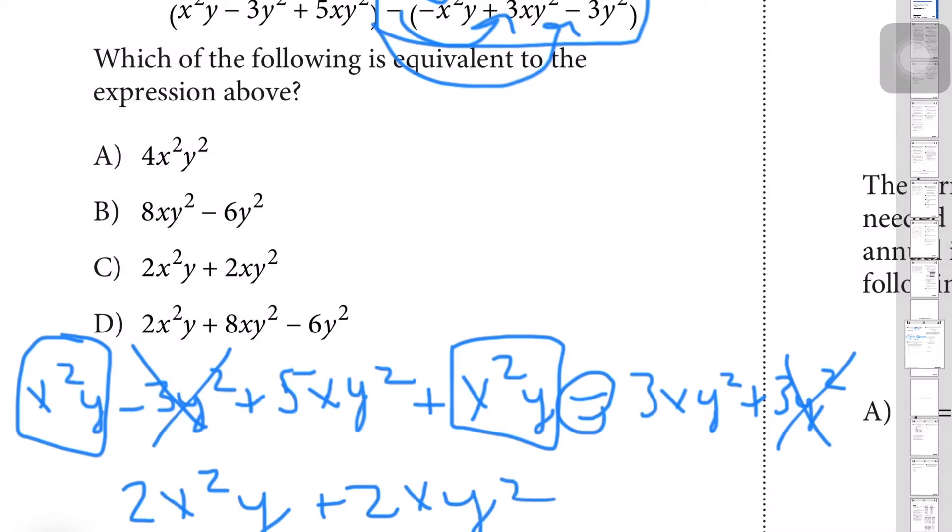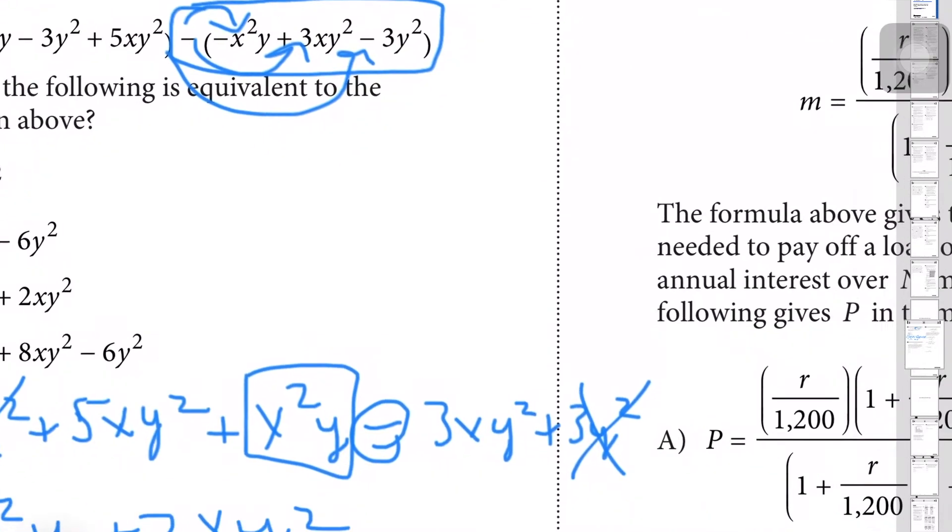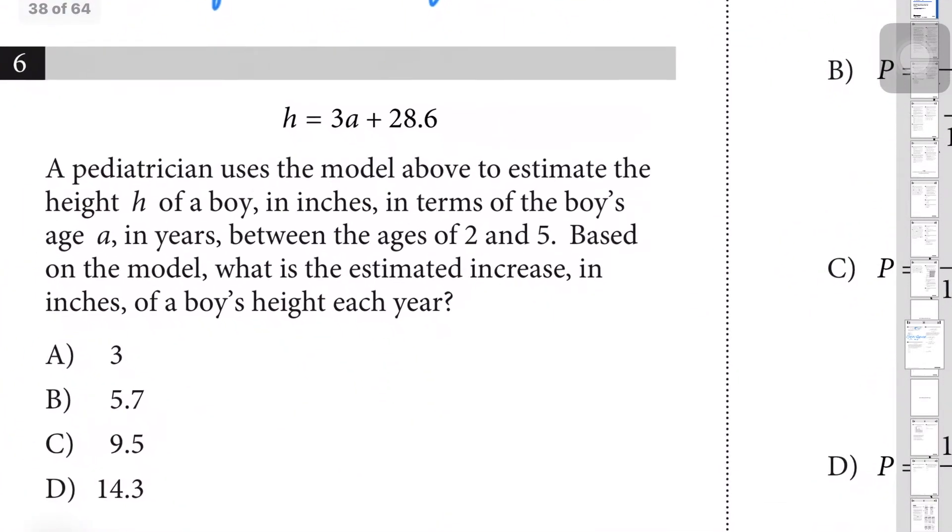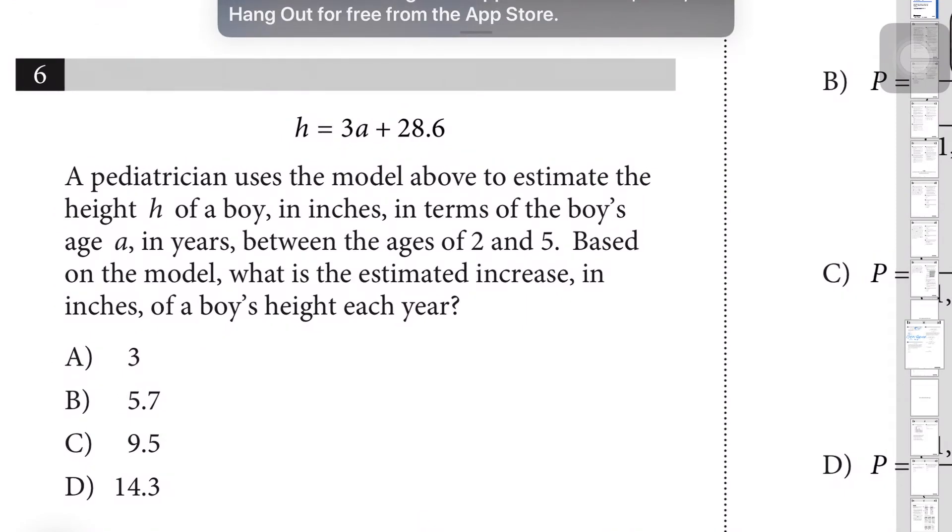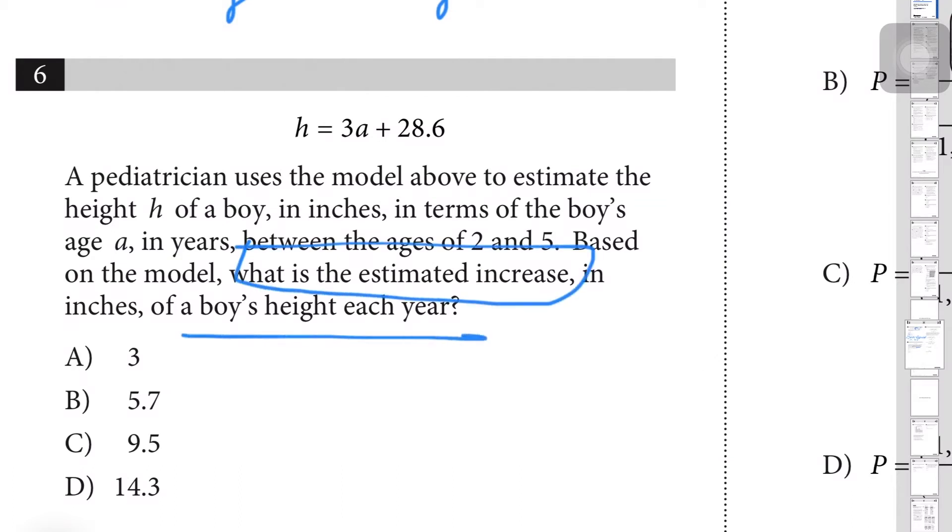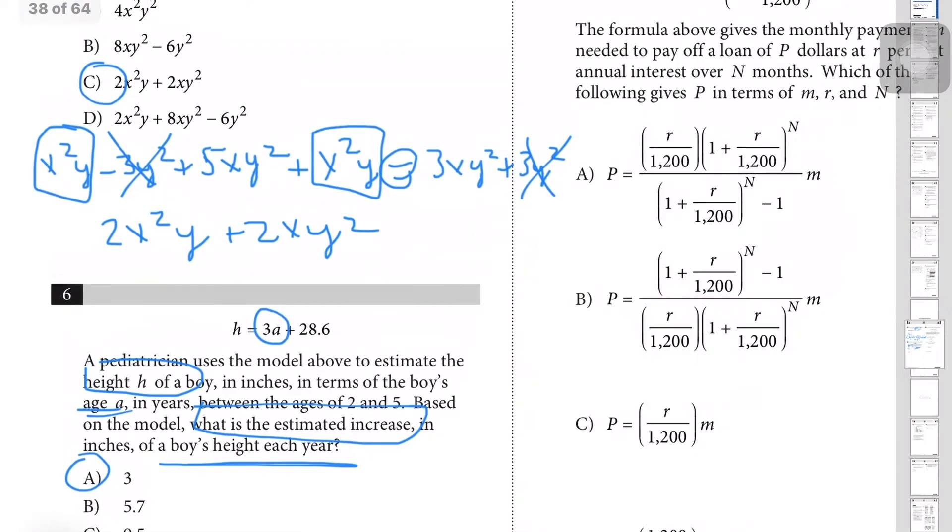Next question: a pediatrician uses the model above, h = 3a + 28.6, to estimate the height h of a boy in inches in terms of a boy's age a in years between the ages of 2 and 5. Based on the model, what is the estimated increase in inches of a boy's height each year? Simply for this question, it's asking you how much does the height increase, its estimated height increase per year. So this is just asking you for the slope, right? Because it tells you the model above estimates the height of a boy in inches per his age. So it's just the slope of the equation, which would just be the 3a, and so that'd just be A.